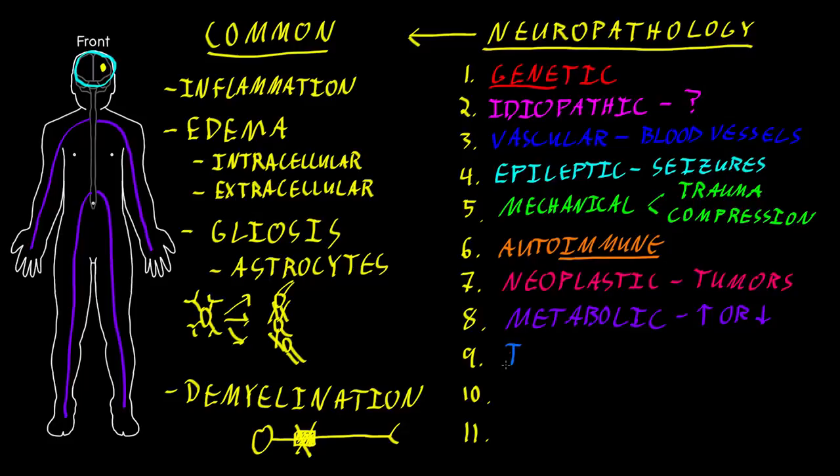The next category I call infectious. This involves pathogens, which is a fancy term for germs. There are many different pathogens that may affect the nervous system, such as certain viruses that can invade brain tissue and cause brain tissue dysfunction.